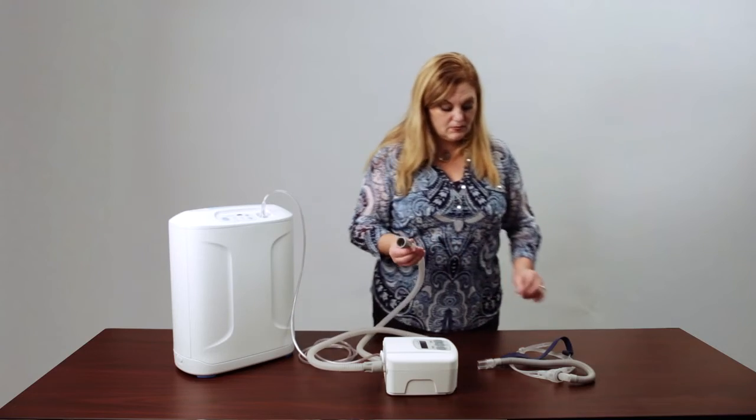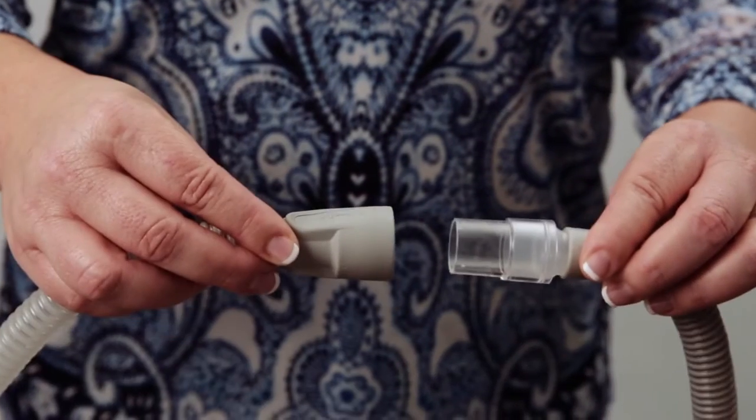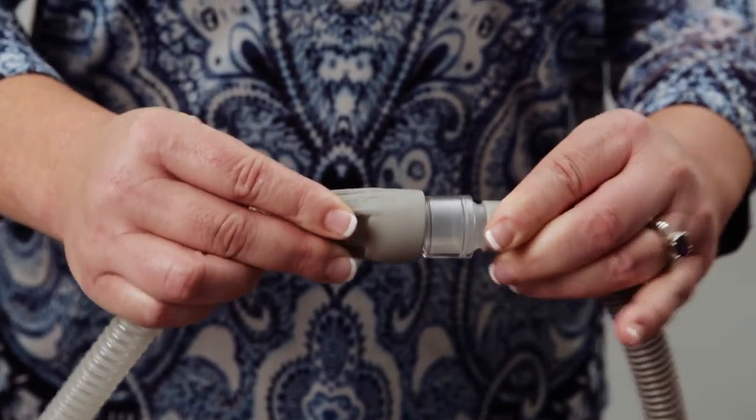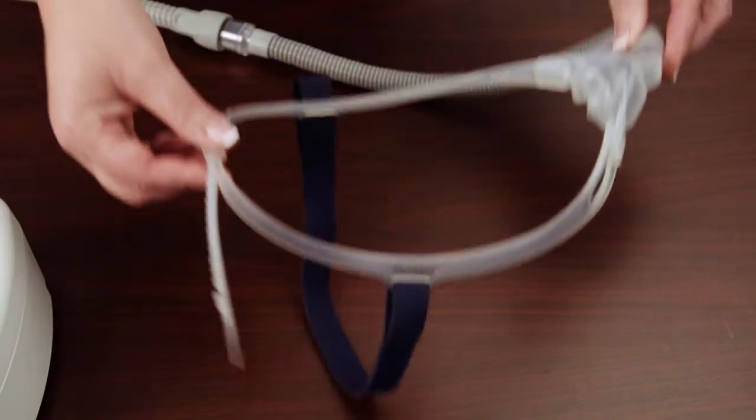Connect the other end of the CPAP tubing to the mask. The oxygen will flow in through the adapter along with the air pressure from the CPAP machine.